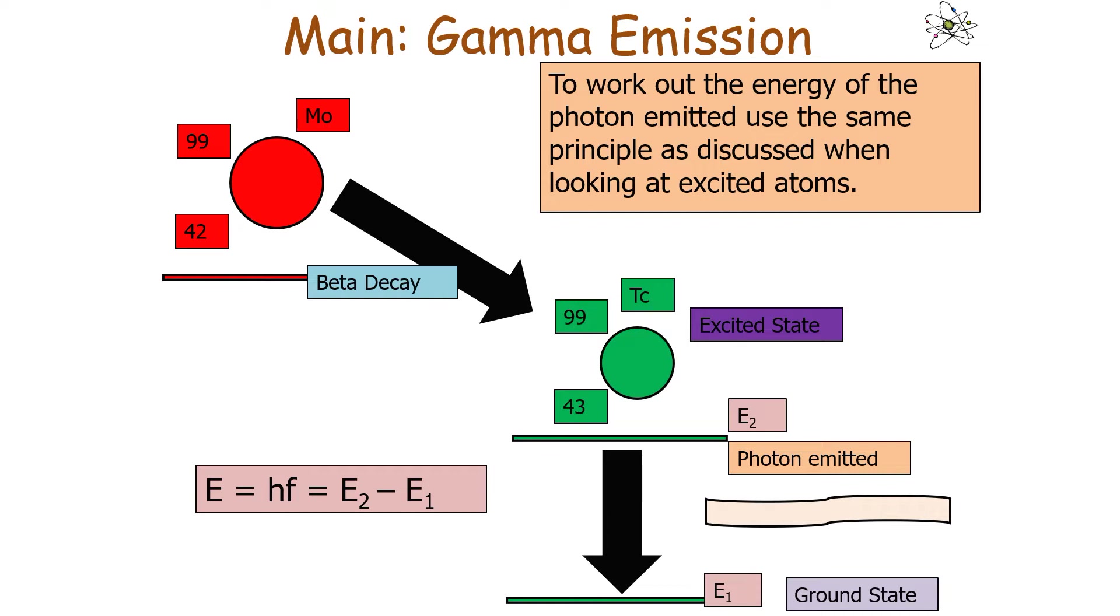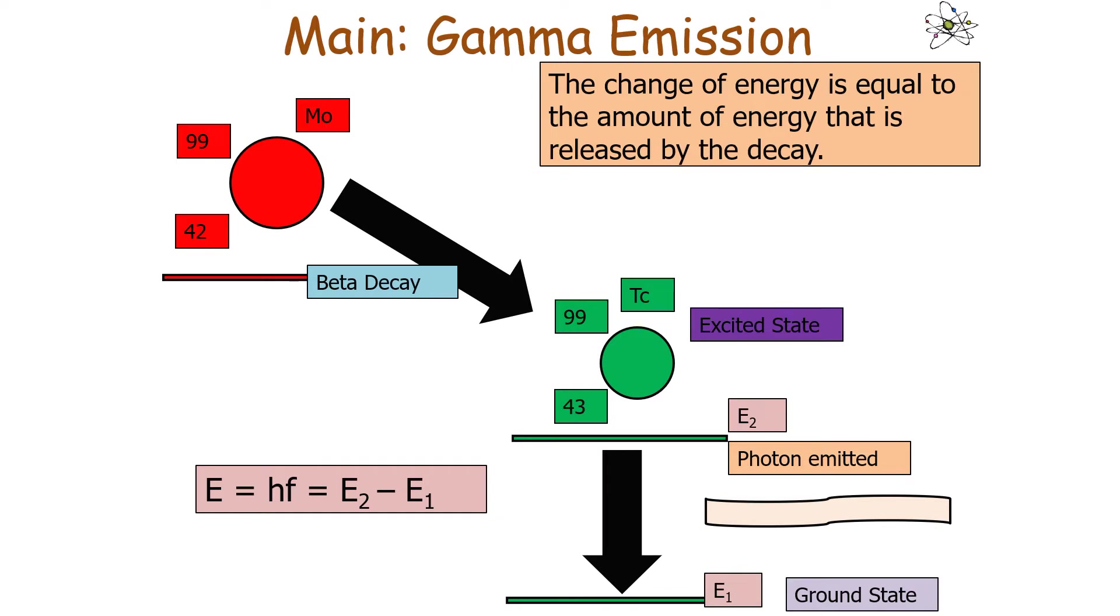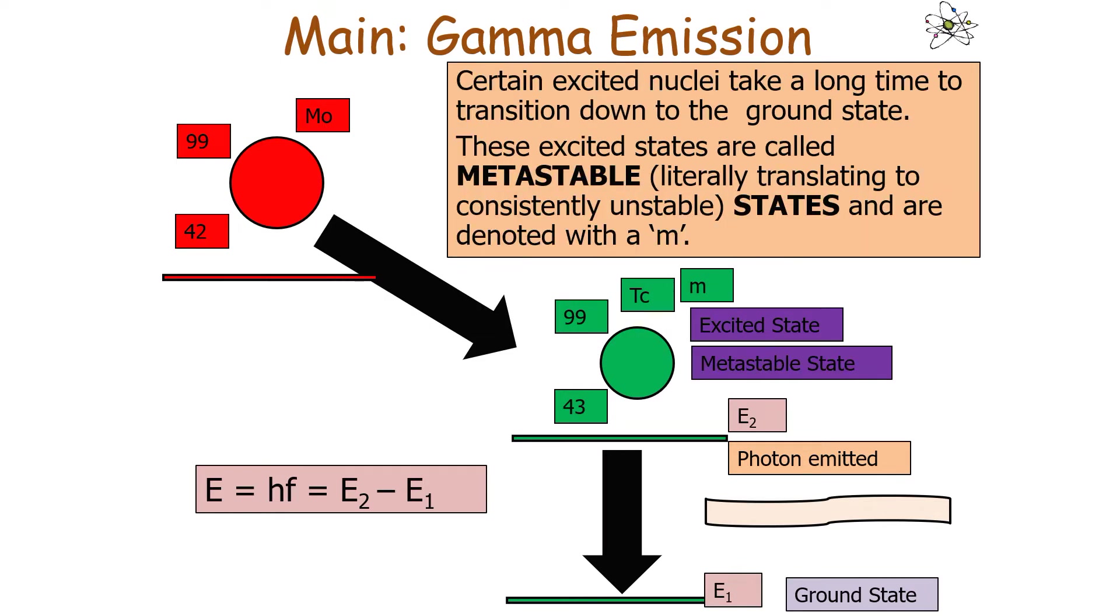The energy released in terms of the photon, which is equal to hf, is equal to E2 minus E1. It's the difference in energy from the excited state to the ground state. The change in energy equals the amount of energy released in the decay.